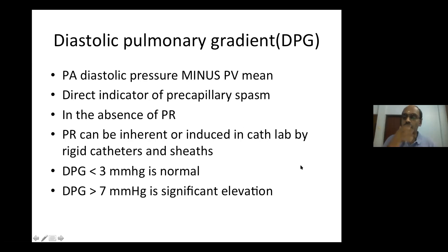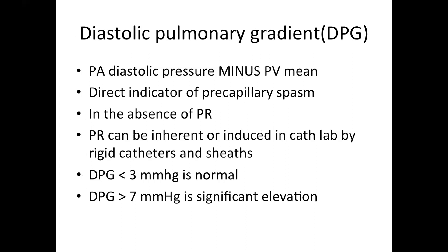There is a question about whether PVRI is three wood units meters squared. The moment we say PVRI or SVRI, it is indexed. PVR and SVR are wood units, whereas if it is cardiac output or QP, QS, QEP, it is liters per minute per meter squared. So the body surface area goes to the denominator in QP, QS, and it sits on the numerator in PVRI.